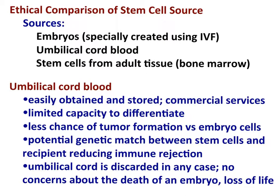Evaluating umbilical cord blood stem cells: the upside is they are easily obtained and stored, with commercial services available. The downside is limited capacity to differentiate — not as pluripotent as embryonic stem cells. There is less chance of tumor formation, a better potential genetic match reducing immune rejection, and since the umbilical cord would be discarded anyway, there are fewer concerns about the death of an embryo or loss of life.